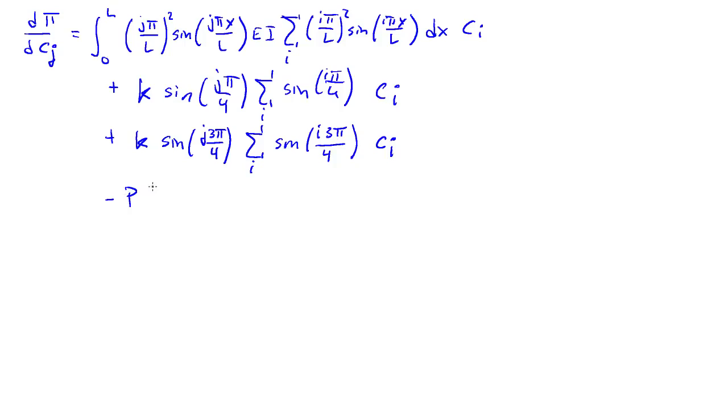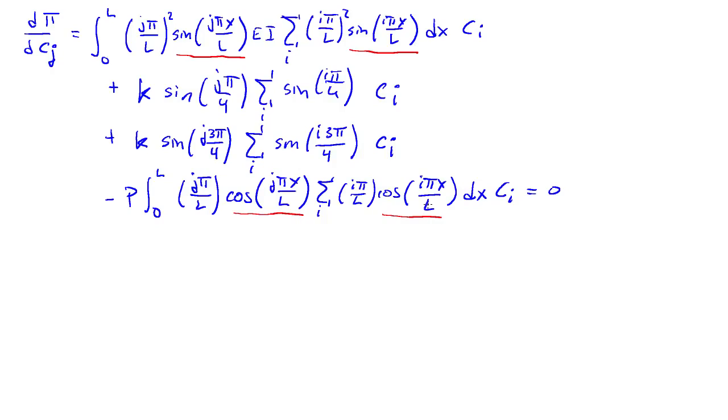And lastly, the potential of the load term is integral 0 to L, J pi over L times the cosine of J pi x over L times the sum over I of I pi over L, cosine of I pi x over L dx times CI. And this whole thing is equal to 0. Notice that I have integrals where I have orthogonal functions multiplying each other. So the two integral terms are actually going to produce diagonal matrices.